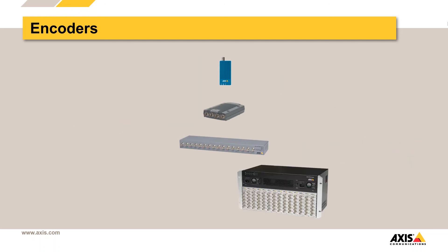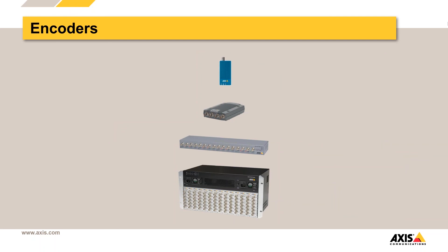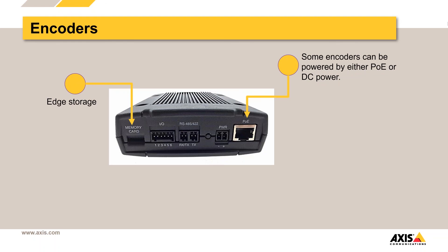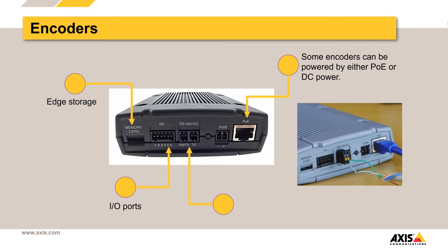There's a wide variety of encoders, too, depending on your solution — from one channel all the way up to 84 channels. They come with edge storage so you can put an SD card in many of them. They're Power over Ethernet, so there's your PoE power. IO ports let you trigger a light or a door. And serial ports — for the encoders that support it — are how you would use an encoder with an analog PTZ camera so you can control it that way.